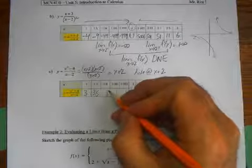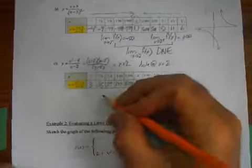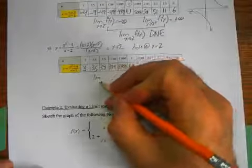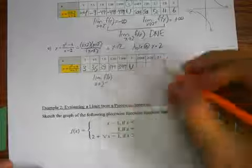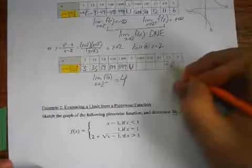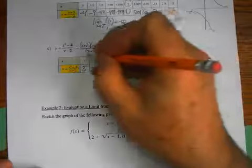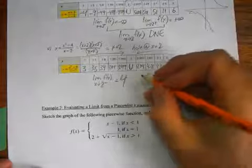Plugging in x equals 2 in the original gives zero in the denominator — undefined, and that's where the hole comes in. Filling in values from the left: x equals 1 gives 3, then 3.5, 3.9, 3.99, 3.999 — it's apparent the limit is approaching 4 from the left side. So the limit of f of x as x approaches 2 from the negative side equals 4. From the right side: x equals 3 gives 5, then 4.5, 4.1, 4.01, 4.001 — that limit is also 4.